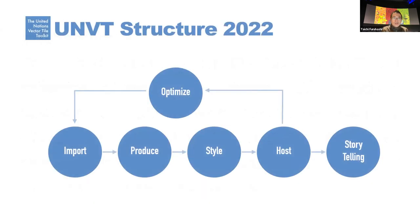My student will explain the details. UNVT has a suite-like structure with components that divide various functions. This is the latest UNVT structure: it covers importing, producing, tiling, hosting, storytelling, and optimizing processes. The UNVT community has attached various tools — for example, FOSS4G tools for importing GIS datasets, Tippecanoe for making vector tile datasets, and Mapbox Studio or Charites for adding styling information. GitHub Pages or the UNVT portal can support hosting.